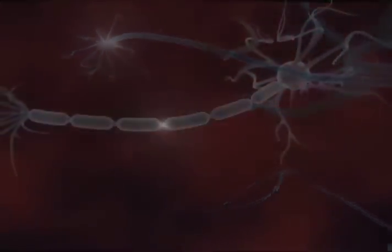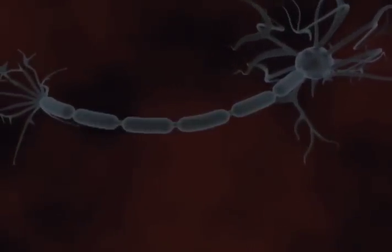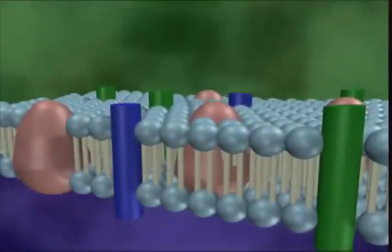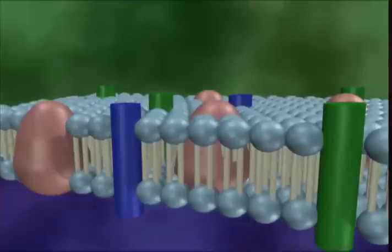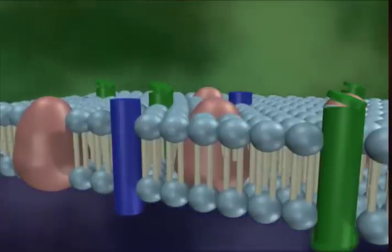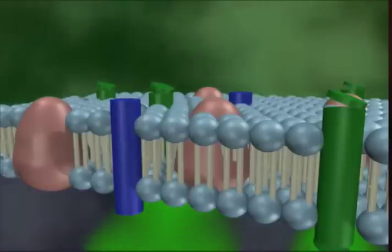Now look at the myelinated axon. The same process applies to the myelinated axon. An action potential develops, and as the sodium comes in, it diffuses through the cytoplasm of the axon. It continues to diffuse through the portion of the axon wrapped in myelin.